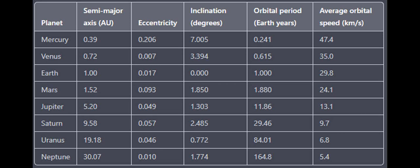Retrograde orbits: most planets and moons in our solar system orbit the Sun and their parent planet in the same direction as the planet's rotation. However, there are some exceptions, such as the moons of Neptune, which have retrograde orbits that take them around the planet in the opposite direction of Neptune's rotation.